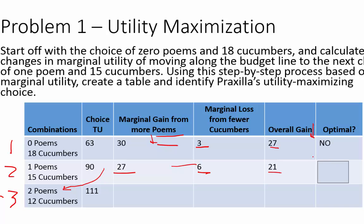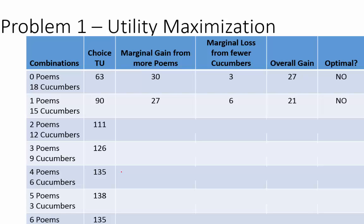Is that optimal? No, we're still increasing, so we can still gain more utility from changing combinations. As we look at total utility, we can see it's still growing — that's really the point. We'll go to the next slide and keep going with this calculation.